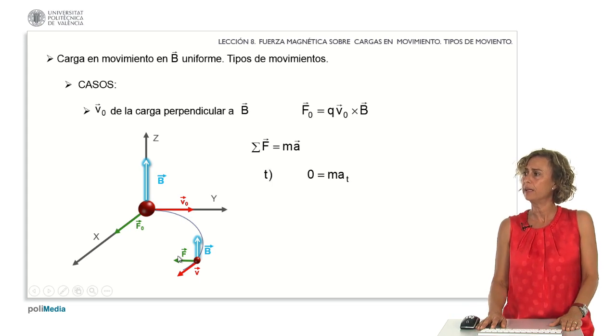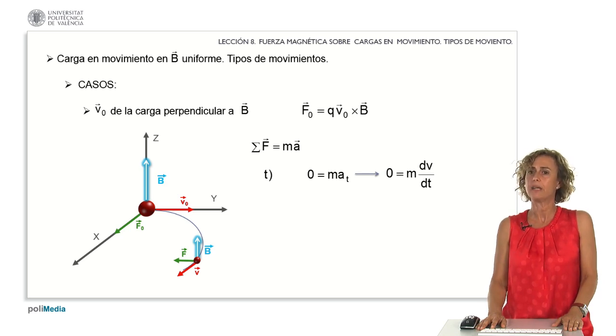In the direction of the tangent, no forces are acting. Thus, the equation becomes zero equals the mass multiplied by the tangential acceleration. Remember, the tangential acceleration represents the derivative of the velocity magnitude concerning time.